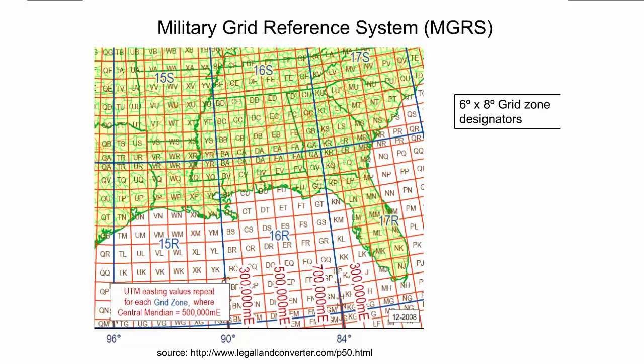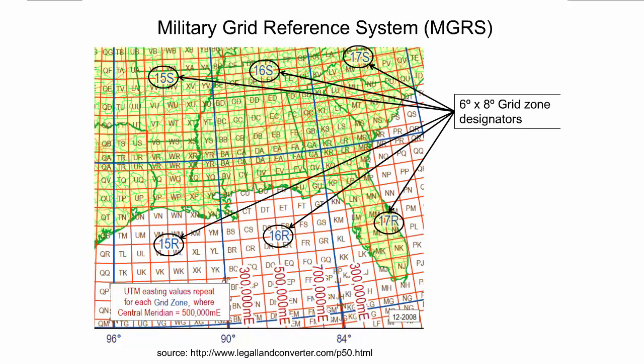The Military Grid Reference System, MGRS, is an alphanumeric system for expressing UTM and Universal Polar Stereographic coordinates. Using the same grid zone designations as the UTM grid system, MGRS consists of numbered 6-degree longitudinal zones and 8-degree latitudinal bands designated by a letter. This illustration shows part of the corresponding index map. Six by 8-degree grid zone designators are printed in blue, as highlighted by the black arrows. Additionally, each grid zone designator is covered by a specific scheme of squares, 100,000 meters or 100 kilometers on a side. A two-letter pair is used to identify each square. With increasing latitude, outer squares gradually become narrower.